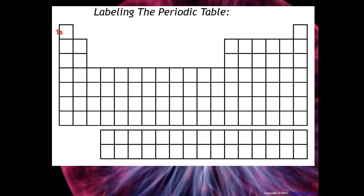Starting on the left-hand side, label 1s, 2s, 3s, and so on down the s-block. Then take a second colored pen and label 2p, 3p, 4p, and so forth. Then take your third color for the d-block, and your fourth color for the f-block.